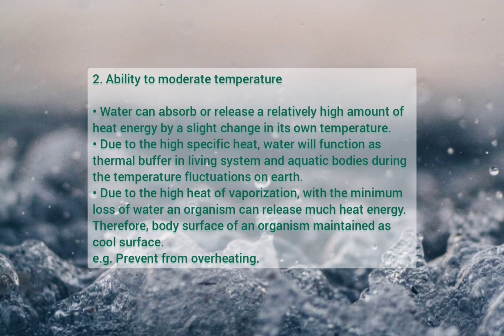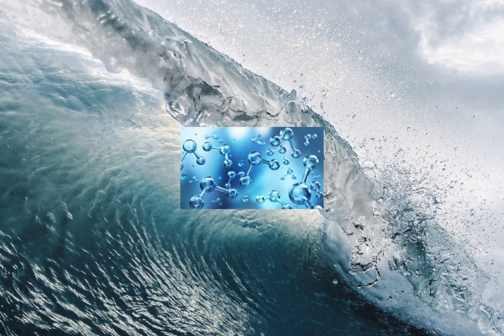Two — ability to moderate temperature. Water can absorb or release a relatively high amount of heat energy with only a slight change in its own temperature. Due to its high specific heat, water functions as a thermal buffer in living systems and in aquatic bodies during temperature fluctuations on Earth. Due to the high heat of vaporization, an organism can release much heat energy with minimum loss of water, helping the body surface maintain a cool temperature. For example, evaporation of sweat from skin helps maintain body temperature. Transpiration cools the plant body surface and prevents it from becoming too warm in sunlight.